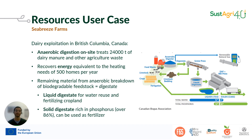Another example at the farm level is the use of anaerobic digesters to treat manure and agricultural residues, from which it is possible to obtain energy in the form of methane and heat, nutrient-rich water for fertigation, and a solid fraction rich in phosphorus that can be used as fertilizer.